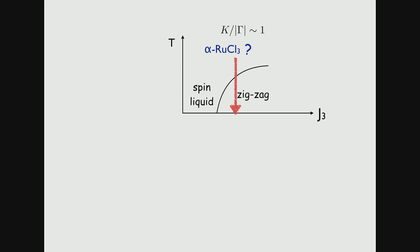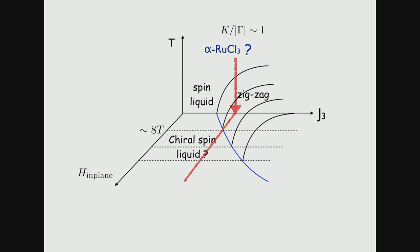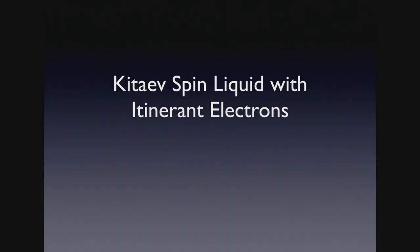A speculative phase diagram: alpha-RuCl3 sits in the zigzag-ordered region. Applying a magnetic field suppresses the zigzag order, possibly entering a chiral spin liquid state before reaching a fully polarized paramagnet — consistent with Matsuda's thermal Hall data. This is one possibility if the quantized κ_xy measurement is taken at face value.